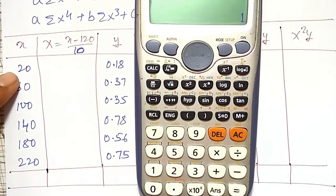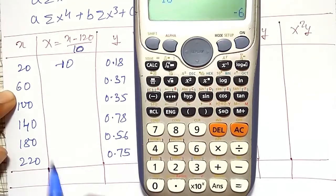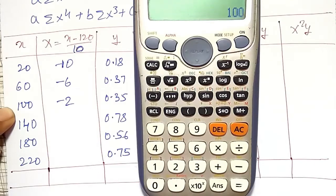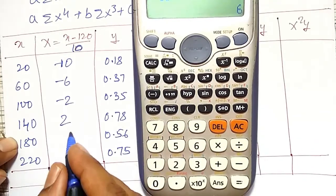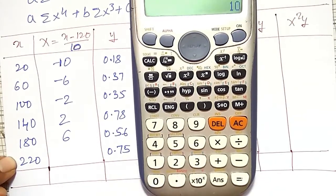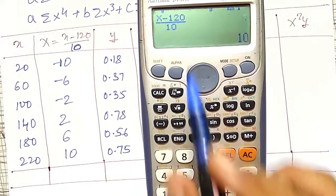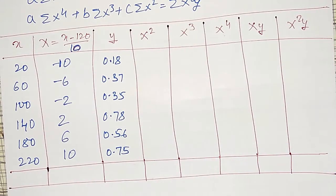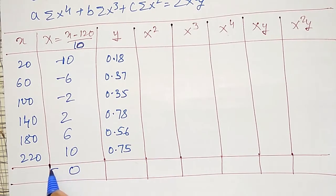My x value 140 gives +2, 180 gives +6, and 220 gives +10. This is my capital X substitution, using (x − 120) / 10. Taking the sum: −10 − 6 − 2 + 2 + 6 + 10 = 0. So the sum of capital X equals 0.